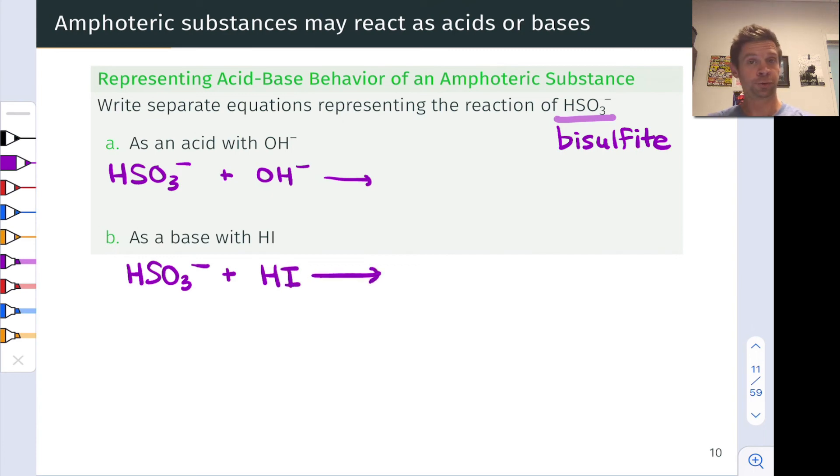HSO3- acting as an acid. Well, acids donate protons, and the acidic proton in HSO3- is right there. In donating H+, the products will be H2O or HOH is another way to write it. With the transfer of that proton, the other product is SO32-. Notice the charge is conserved overall. We started with an overall charge of negative 2 on the reactant side, and we ended with a charge of negative 2 on the product side as we must. The transferred proton is right there. That's why I wrote water as HOH.